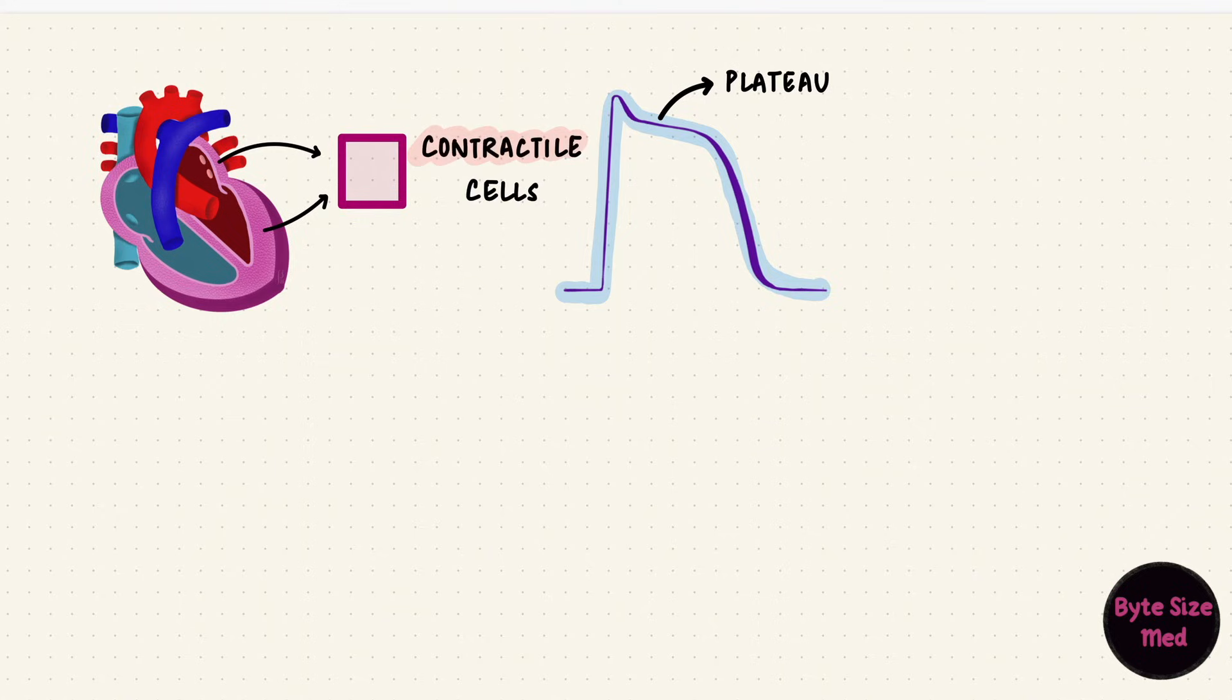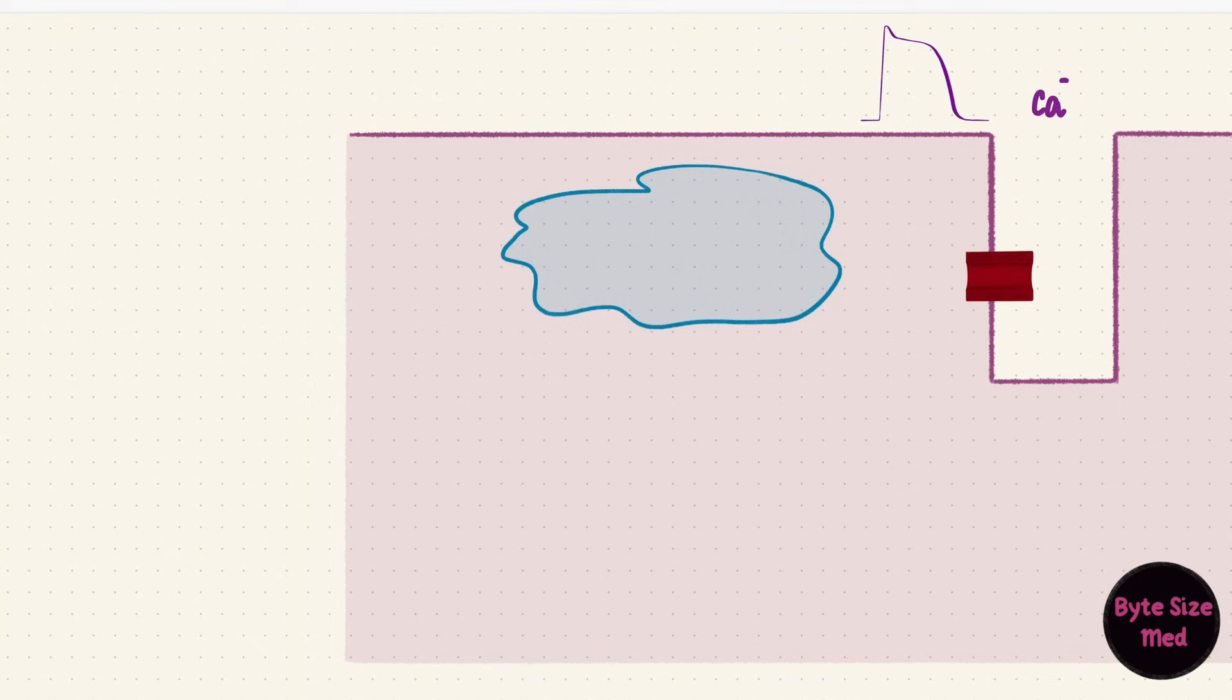So this would be an action potential in a contractile cell of the heart. Its job is to make the cardiac muscle cells contract. During the plateau phase, there's a calcium influx that happens. This entry of calcium stimulates a receptor on the surface of the sarcoplasmic reticulum, which is a calcium storage center inside the cell.